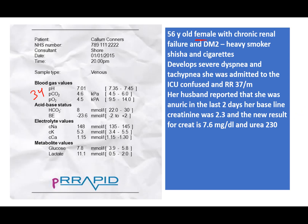Case 2: A 56-year-old female with chronic renal failure and diabetes, heavy smoker, admitted to the ICU confused with respiratory rate 37 and severe dyspnea. She was anuric for two days. Creatinine rose to 7.6 (baseline 2.3), urea 230. Her ABG: pH 7.01, CO2 34 mmHg, bicarb 8.